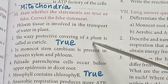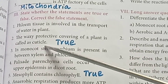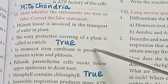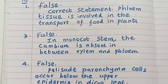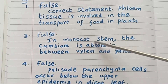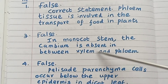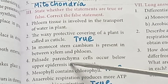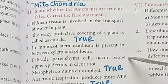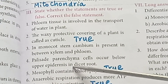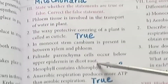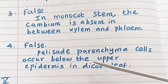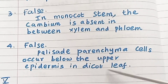The waxy product covering of a plant is called a cuticle — True. In monocot stem, cambium is present in between xylem and phloem — False. Correct statement: In monocot stem, the cambium is absent in between xylem and phloem. Palisade parenchyma cells occur below the upper epidermis in dicot root — False. Correct statement: Palisade parenchyma cells occur below the upper epidermis in dicot leaf.